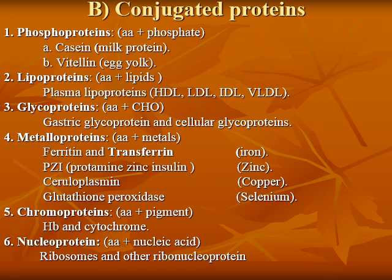The second major type of protein is conjugated proteins. According to the prosthetic group associated with the amino acids, conjugated proteins are classified into: phosphoproteins (amino acids with phosphate), lipoproteins (amino acids with lipid), glycoproteins (amino acids with carbohydrate), metalloproteins (amino acids with metal), chromoproteins (amino acids with pigment), and nucleoproteins (amino acids with nucleic acid).